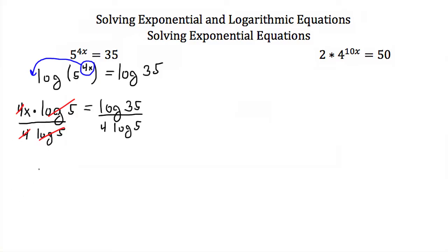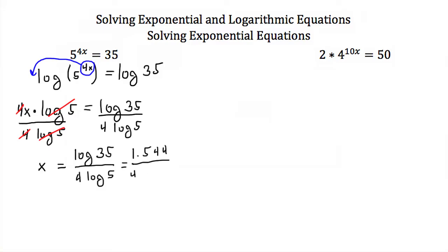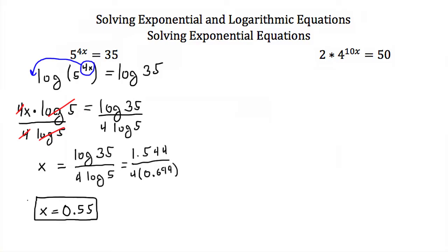On the left-hand side I'm just left with x. On the right-hand side I have the log of 35 over 4 times the log of 5. The log of 35 is approximately 1.544, and the log of 5 is about 0.699. If I take 1.544 and divide it by 4 times 0.699, I get x is equal to approximately 0.55.